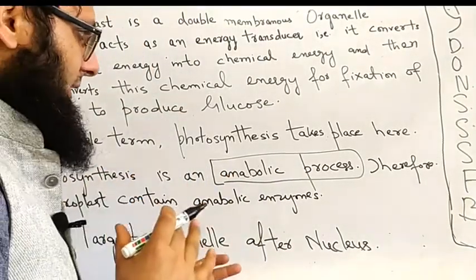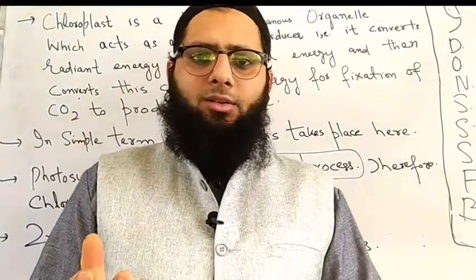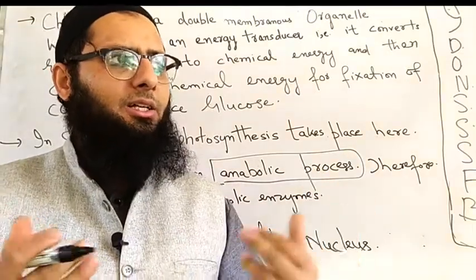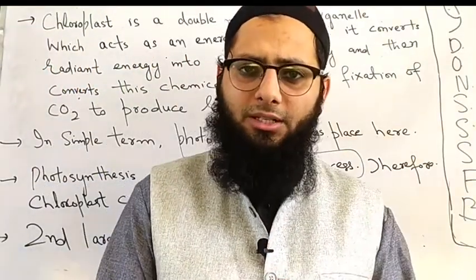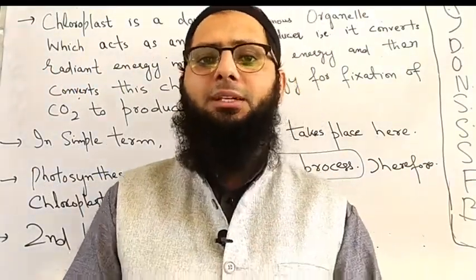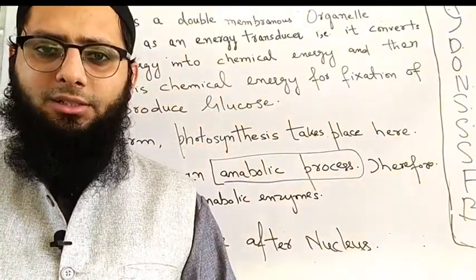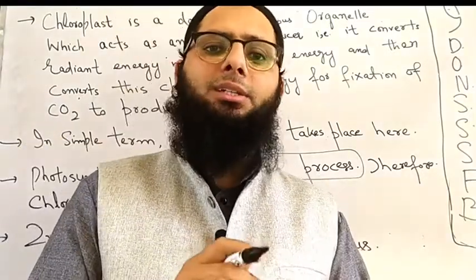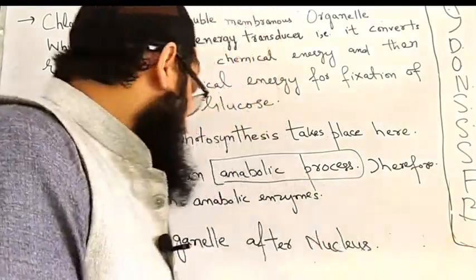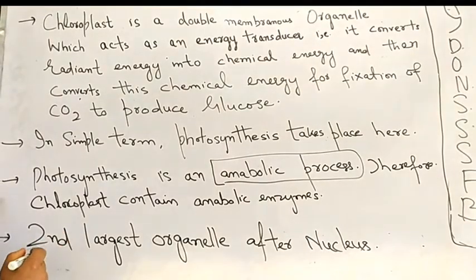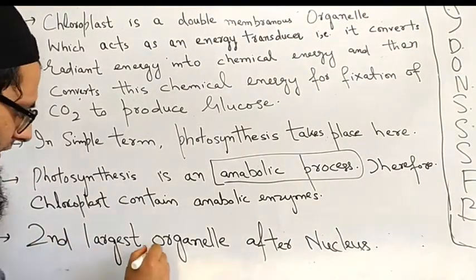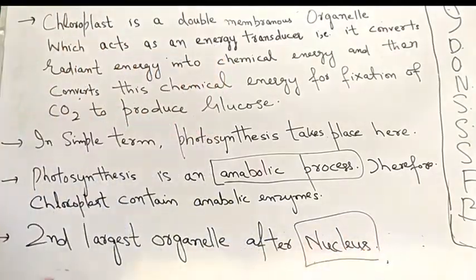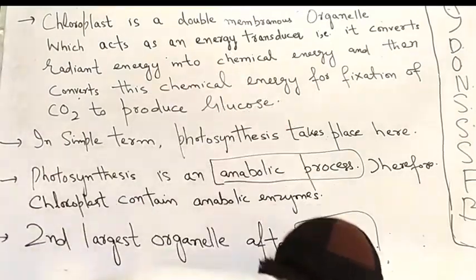So in photosynthesis what happens, actually the light is trapped, the light energy trapped is converted into the chemical energy as ATP and NADPH. Then these reducing agents are used for the fixation of carbon dioxide for formation of food glucose. Let me tell you one second point over here, that is it is the second largest organelle after nucleus. Nucleus being the first one, this is the second one in case of plant cells. So this is about introduction of it.